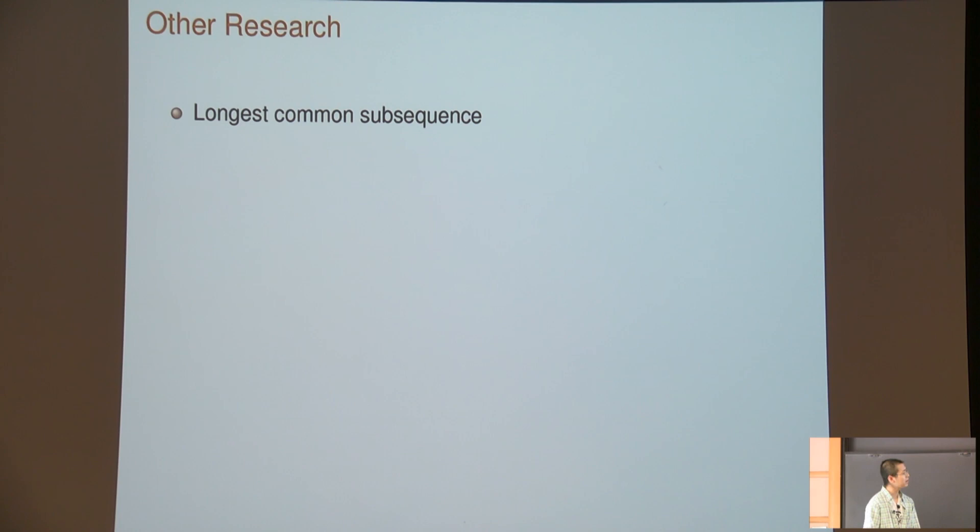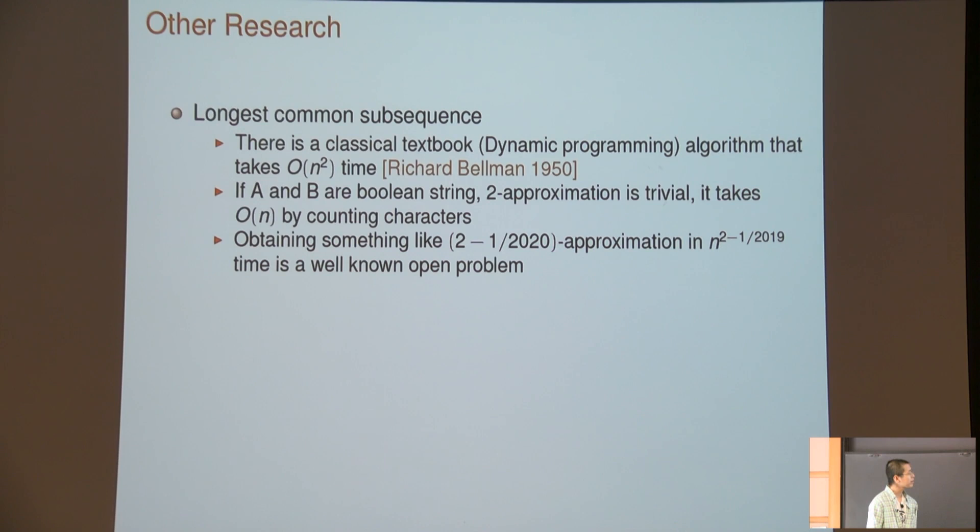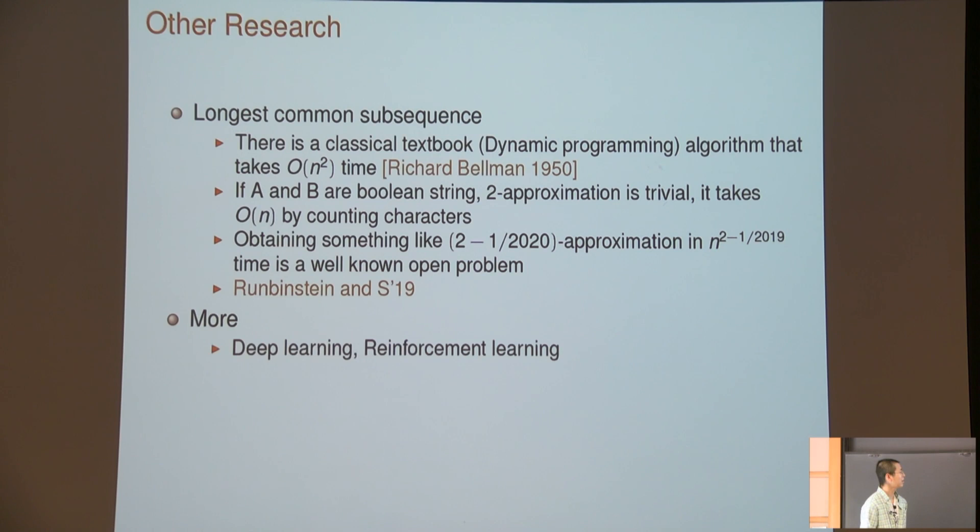I also did some other research not related to matrices. For example, longest common subsequence. The task is you give two strings and you want to compute the longest sequence which is common to both. The sequence doesn't need to be continuous. A very classical textbook algorithm, by doing dynamic programming, runs in n squared time. If the strings are binary, you can do some trivial counting and it takes linear time. For a long time, there was nothing between these two algorithms. We can actually give something like n to the two minus one over two hundred twenty into the one minus one over nineteen. Recently we proved this is possible. I'm also doing deep learning and min flow max cut. I'm also doing quantum deep learning flow max cut. This is just joking.